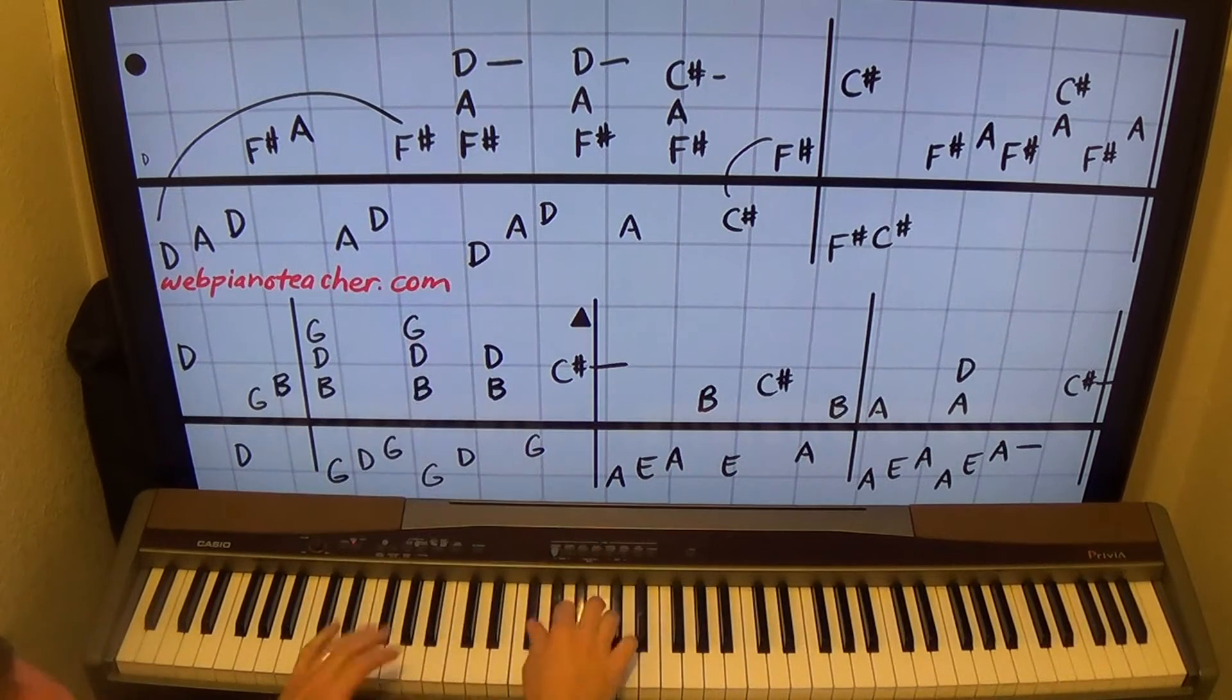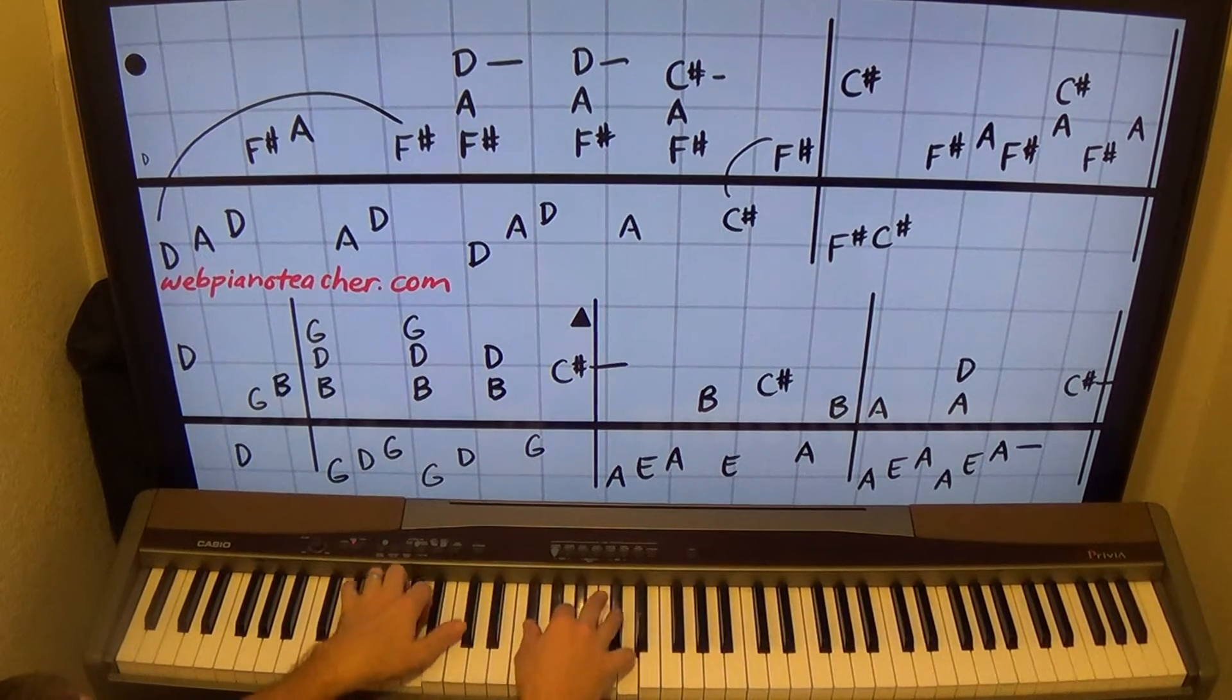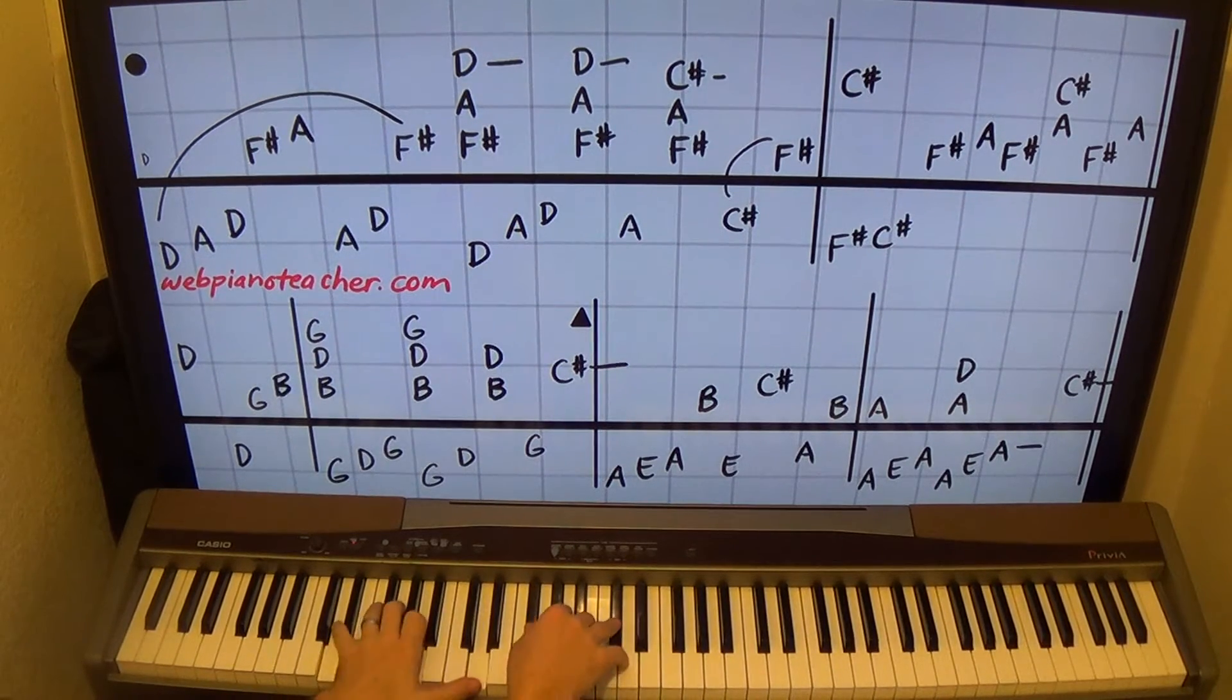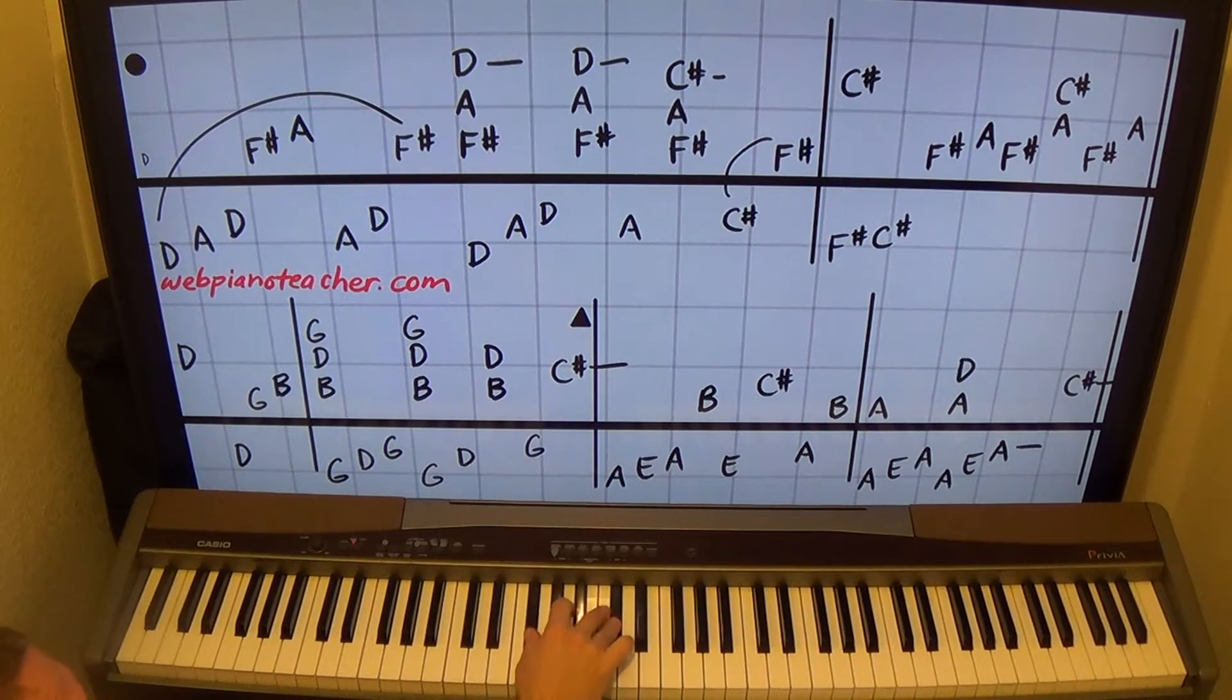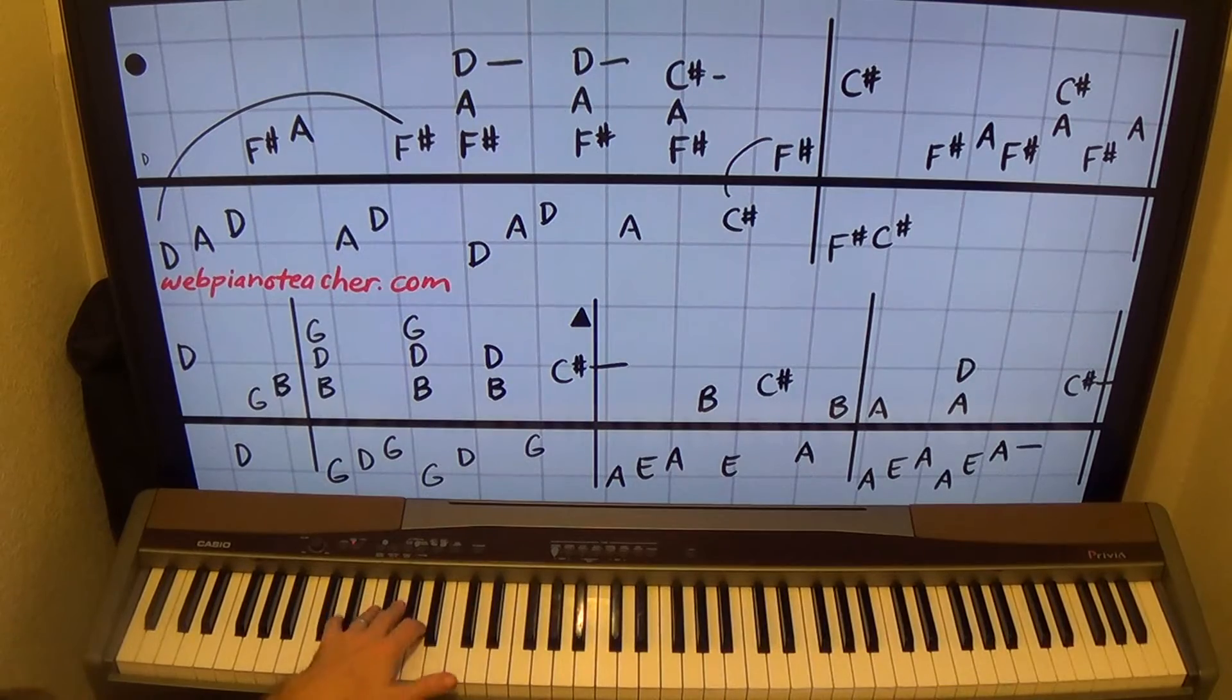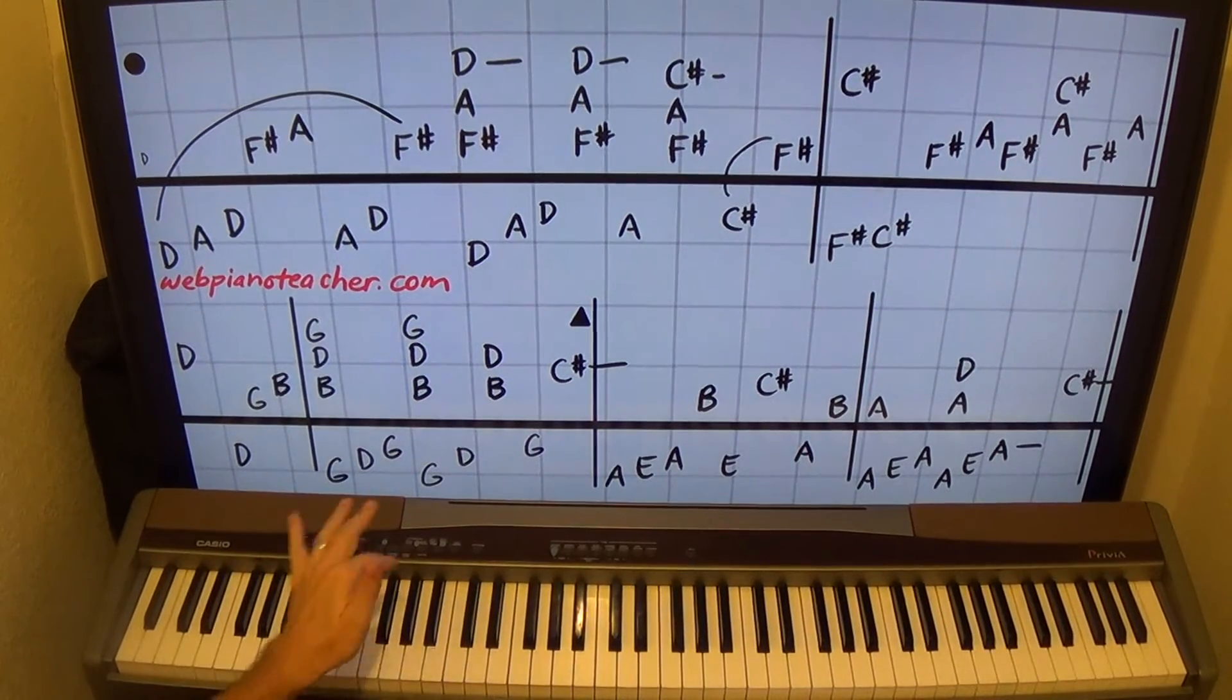So from here it's 1 and 2 and, left, right, left, right. And you want to hear the melody, so kind of bring out the right hand so that we don't hear all the accompaniment equally. Just kind of let that flow underneath.